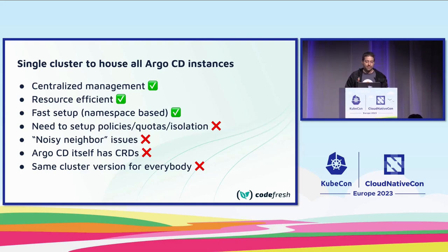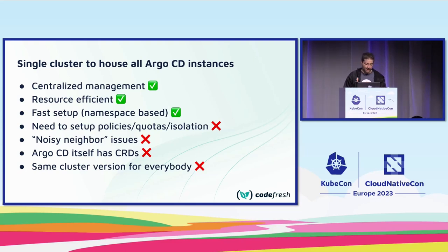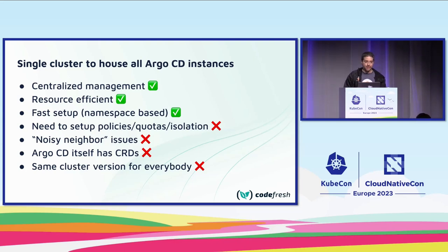However, the namespace approach is not secure by default. There is no isolation between namespaces — you need to set up policies and quotas. You also have the usual problems with resource contention. Specifically for us, because Argo CD has its own CRD, we can only use one CRD instance for everybody, meaning everybody is locked to the same cluster version and the same Argo CD version, which may not be optimal.